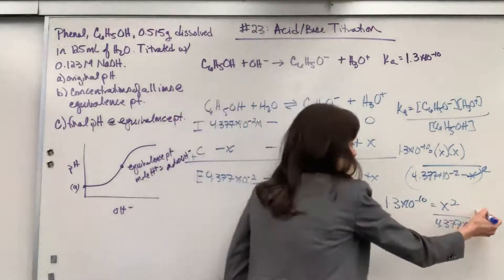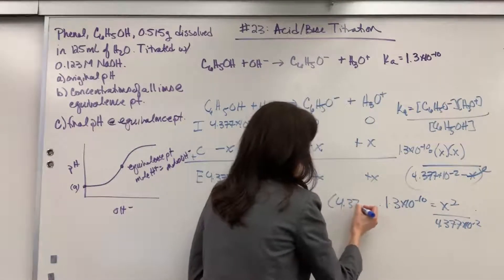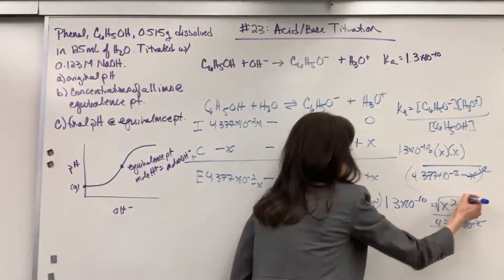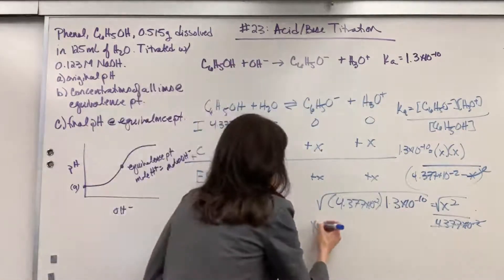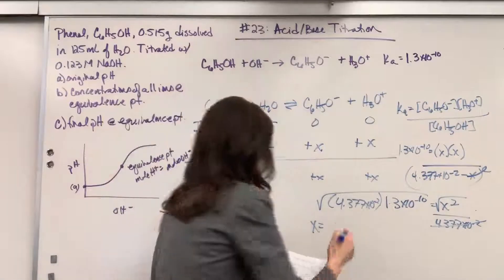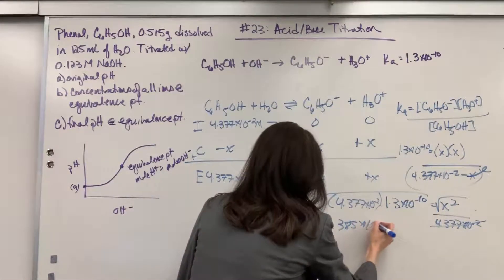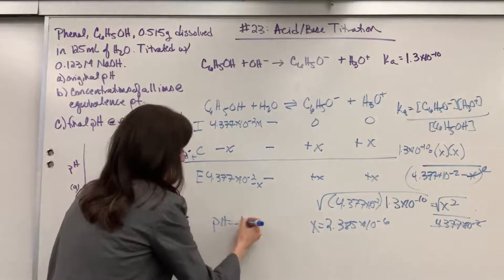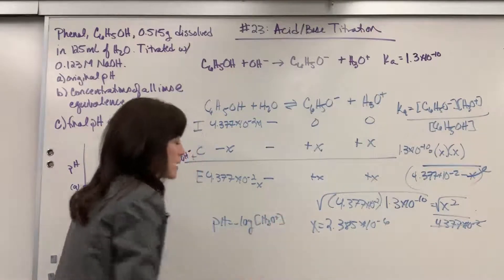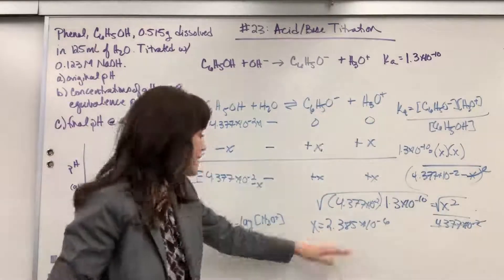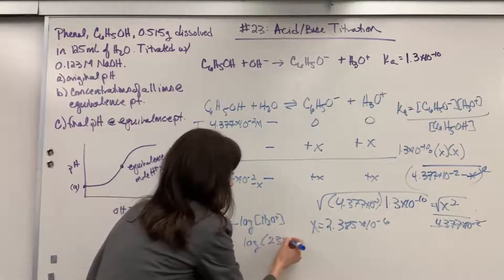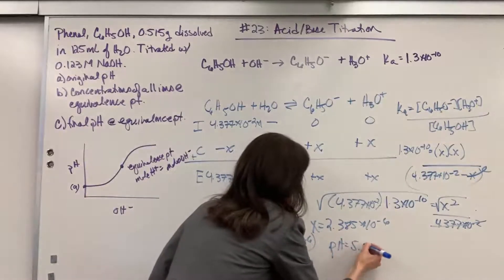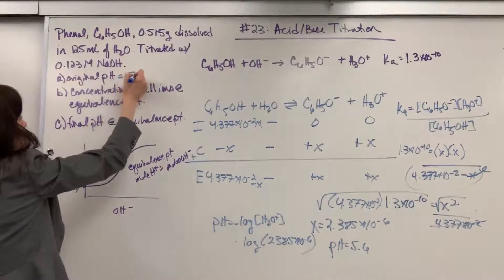So we can go ahead and do the math: 1.3 times 10 to the minus 10 equals X squared divided by 4.377 times 10 to the minus 2. Multiply both sides by 4.377 times 10 to the minus 2, then take the square root of both sides. X equals 2.385 times 10 to the minus 6. It wanted pH — pH equals negative log of hydronium. X is hydronium, so the negative log of 2.385 times 10 to the minus 6 gives us pH equals 5.6. That's our answer for part A — the initial pH equals 5.6.